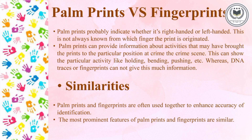Palm prints can provide more information about activities done at the crime scene — such as holding, banding, or pushing — whereas fingerprints and DNA cannot show this. But from fingerprints, we cannot determine what activity was actually done at the crime scene. There are some similarities too: palm prints and fingerprints are used together to enhance the accuracy of identification, and the most prominent features of palm prints and fingerprints are the same or similar.